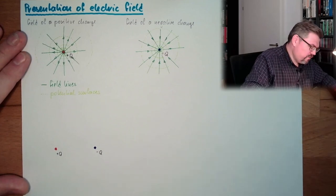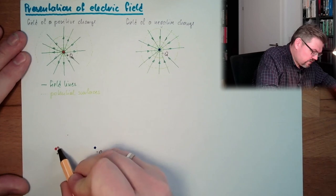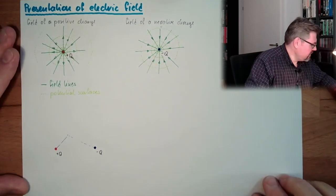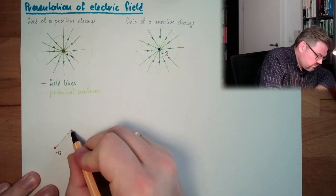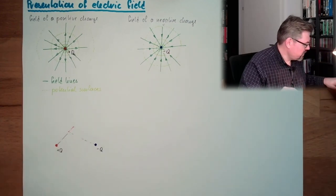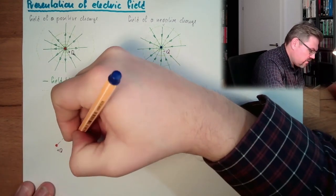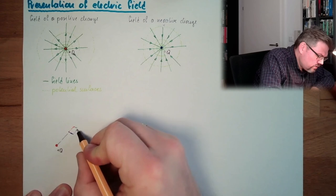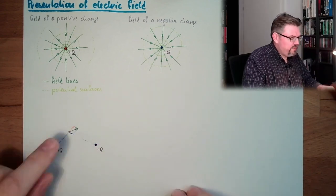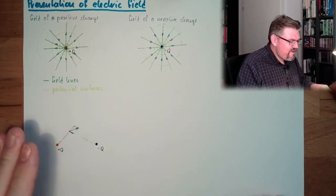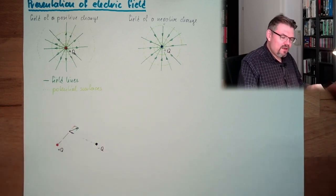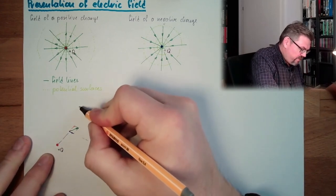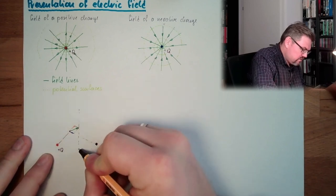If we want to know the field at a certain point, this charge and this charge would have components. The field of the red charge is in one direction; the field of the blue charge is in another direction toward the blue charge, and not that large because it's far away. The combination would be the superposition of those two, going in that combined direction — that's the electric field at this point. We can do this at every point. If the two charges are equal in magnitude but opposite in sign, then we have somewhere a mirror surface.